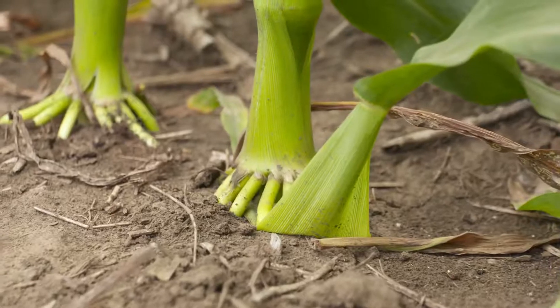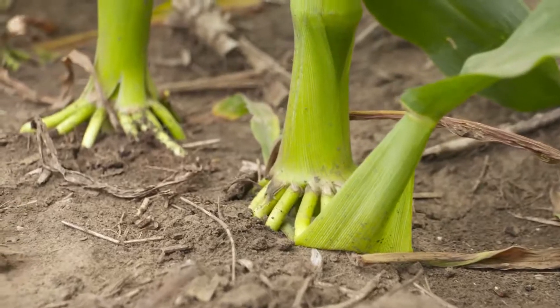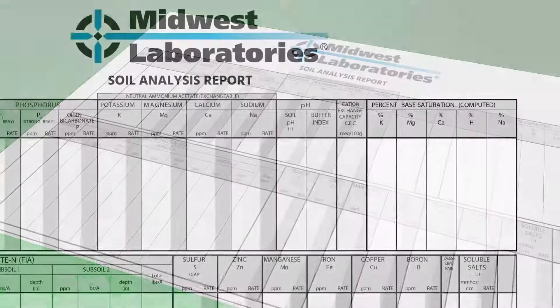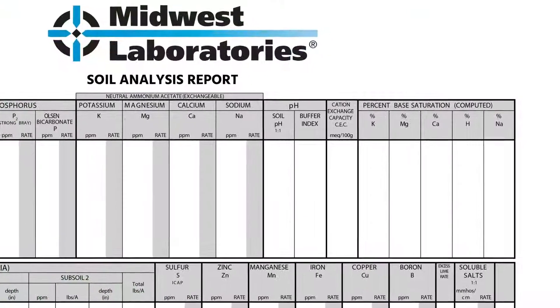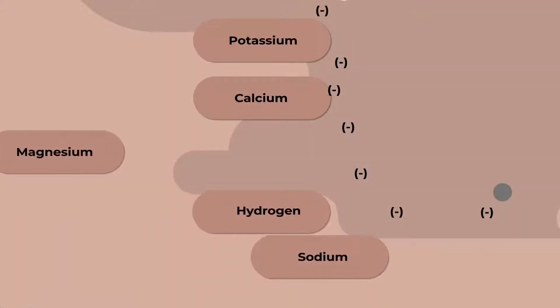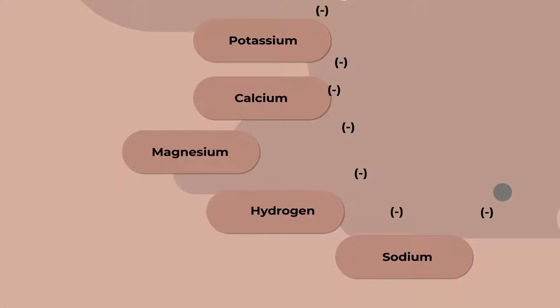Balanced soils deliver fertility more efficiently to your crops, and one of the best ways to measure this balance is to examine the base saturation percentage of the cations in your soil. Percent base saturation is essentially a calculated value looking at cations — potassium, calcium, magnesium, along with hydrogen and sodium — putting all of those nutrients on an even playing field so we're able to compare apples to apples amongst those cations.